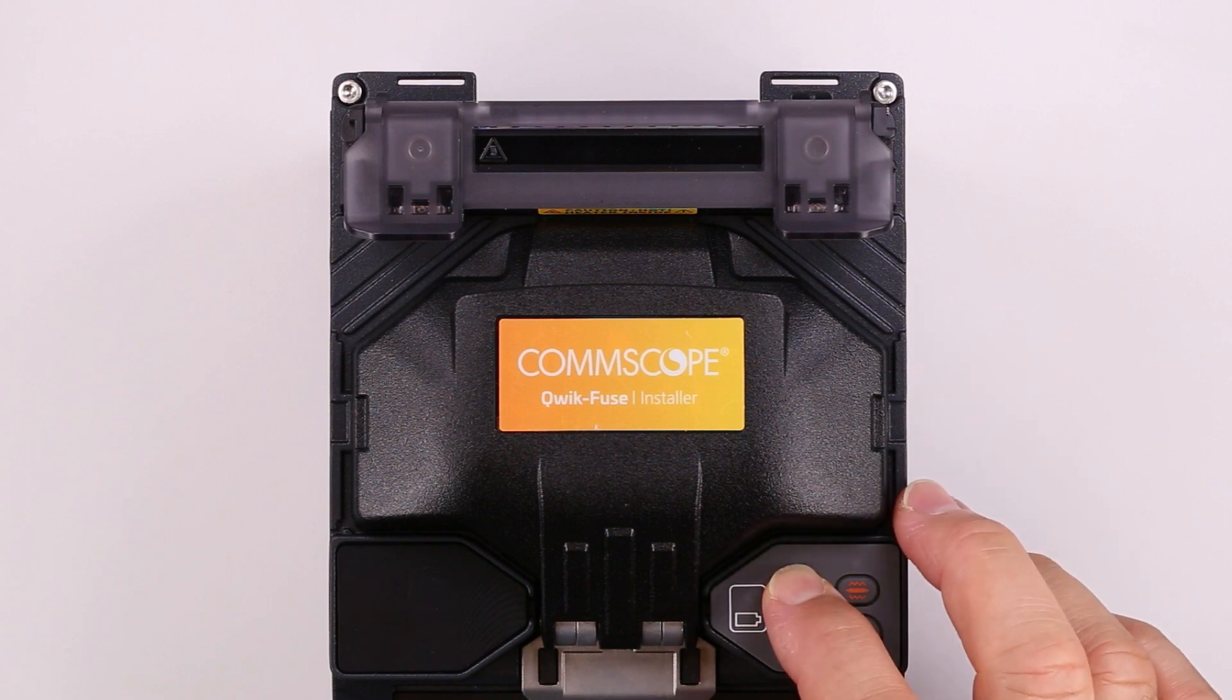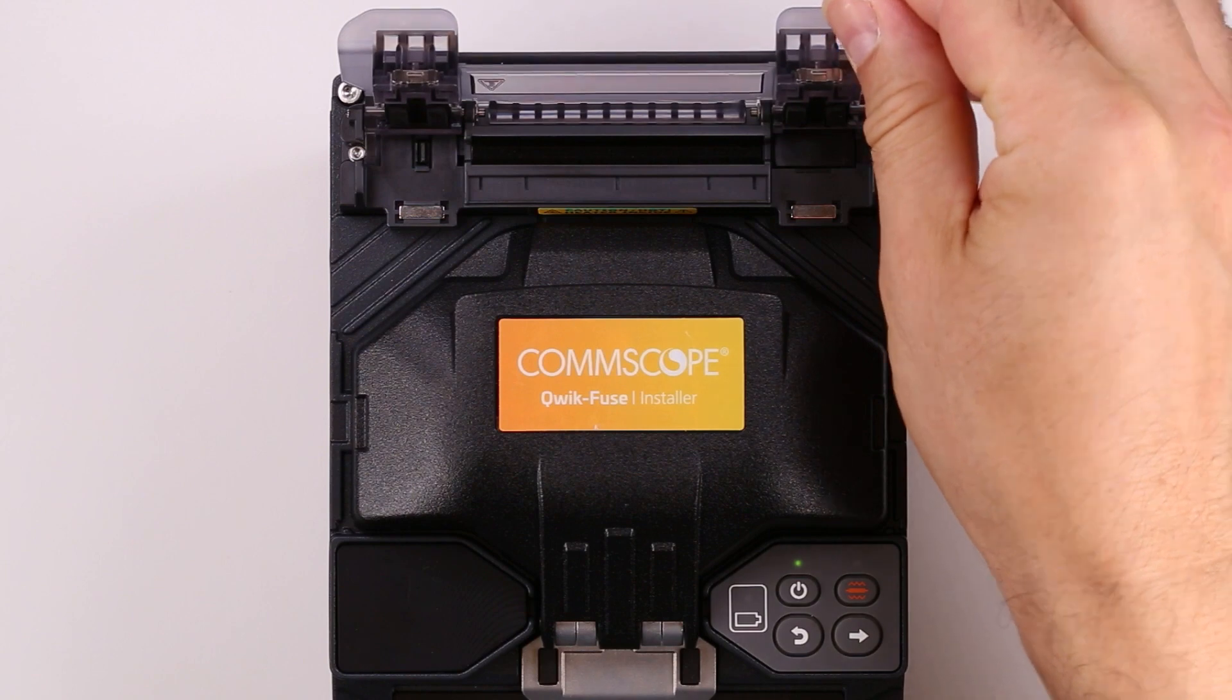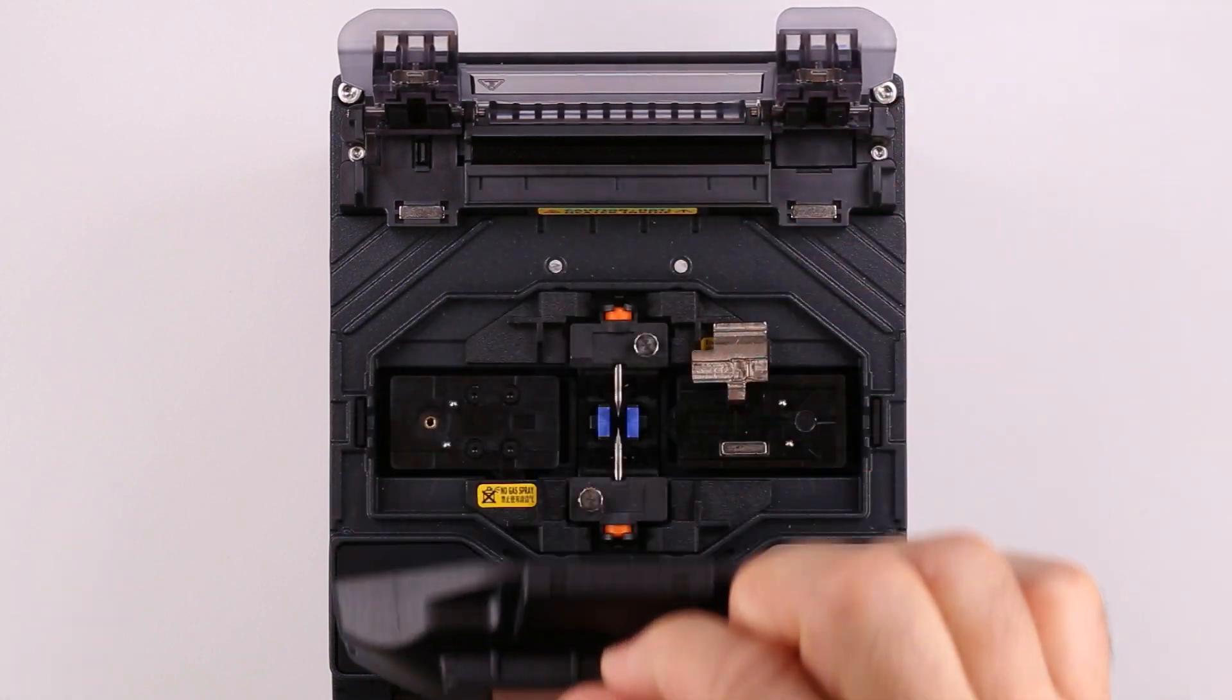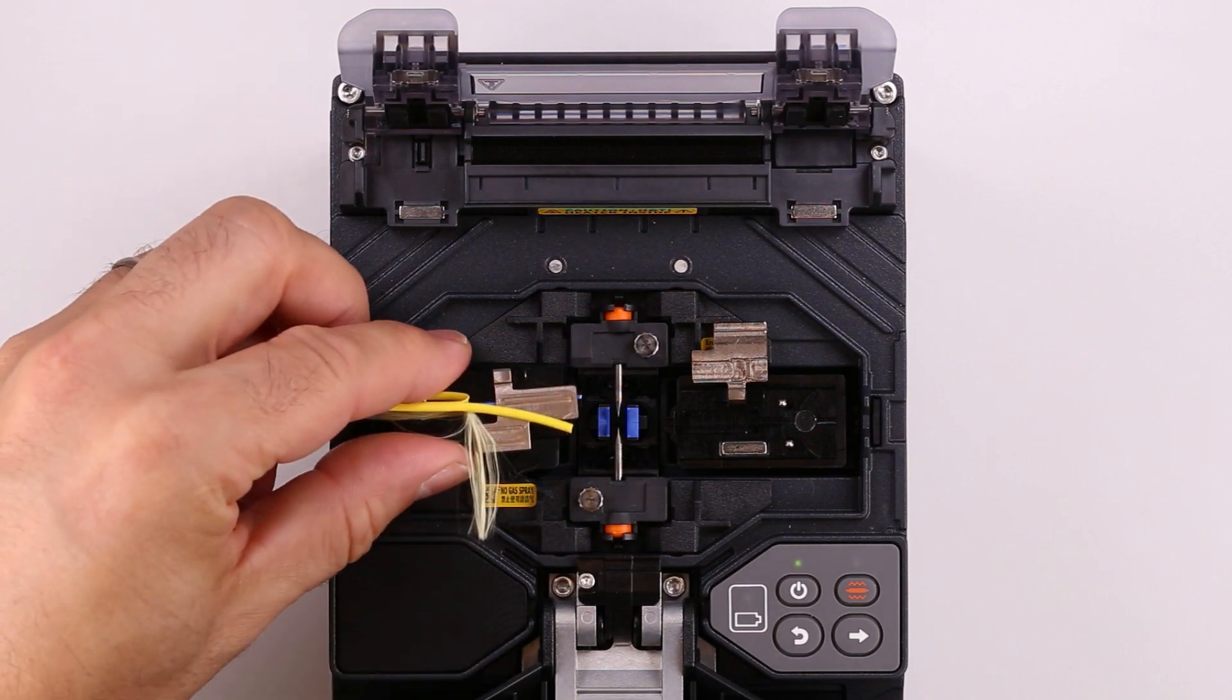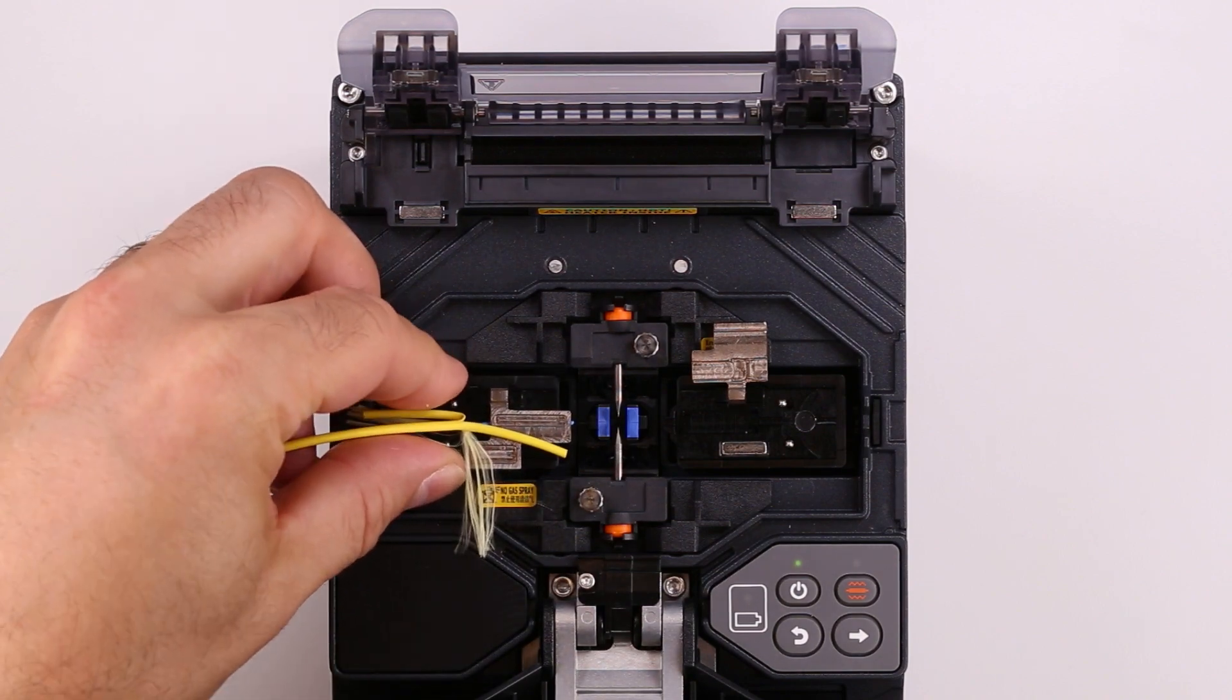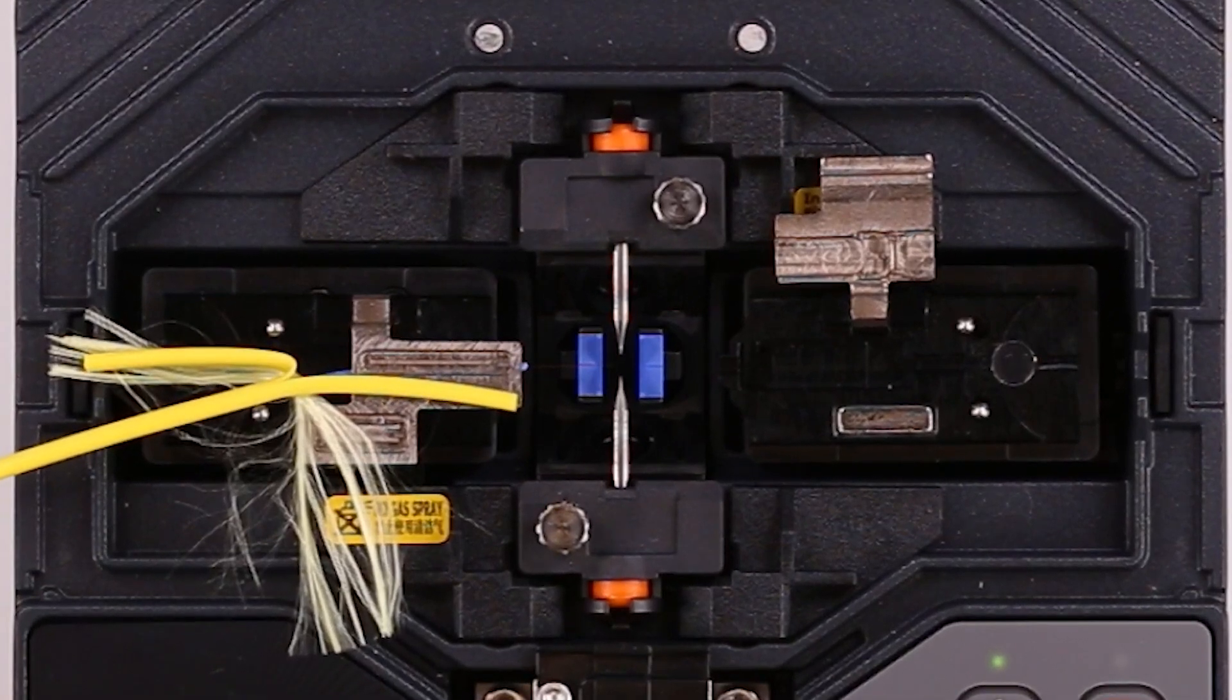Power on the QuickFuse installer. Open the heater lid, then open the wind protector. Place the fiber holder over the two pins on the left side of the installer. Make sure the fiber lays in the bottom of the blue V-groove next to the electrodes.